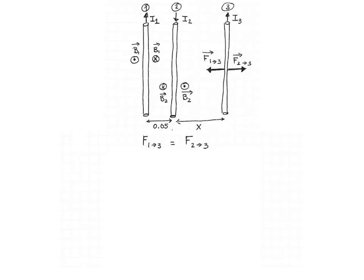We put our thumb along the current. Put your thumb along current 1, and you see that your fingers go into the page on the right-hand side of the wire, and they go out of the page on the left-hand side of the wire. So the angle between the magnetic field of wire 1 and I₃ will be 90 degrees. Similarly, if you put your thumb along I₂, you see that your fingers go into the page on the left-hand side of the picture, and they go out of the page on the right-hand side of wire 2. So the angle between current 3 and magnetic field B₂ is also 90 degrees.